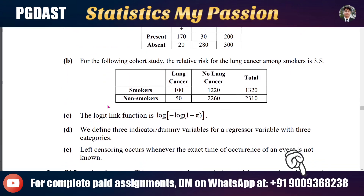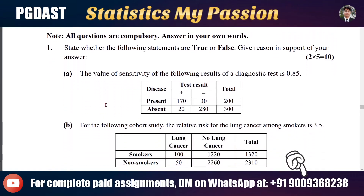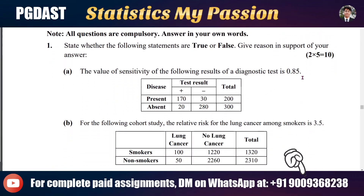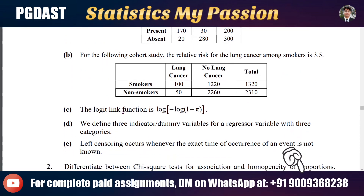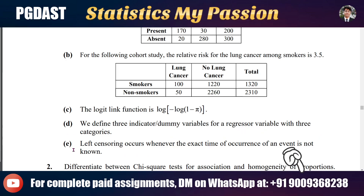There are five questions: (a) the sensitivity of a diagnostic test is 0.85; (b) for a cohort study, the relative risk for lung cancer among smokers is 3.5; (c) the logit link function is log minus log(1 minus p); (d) we define three indicator dummy variables for a regressor variable with three categories; and (e) left censoring occurs whenever the exact time of occurrence of an event is not known.